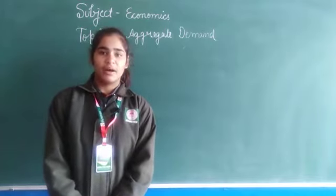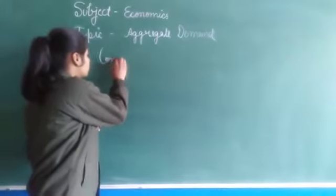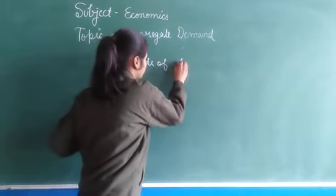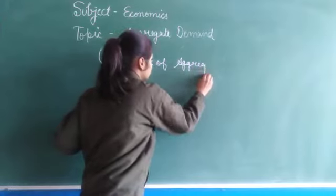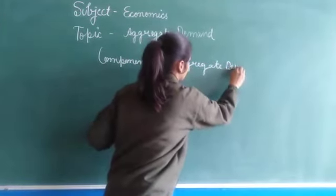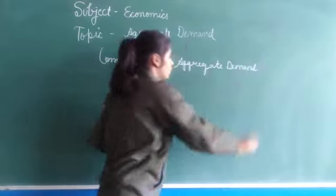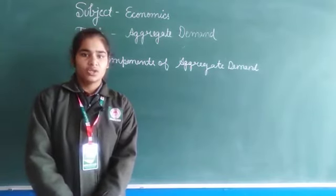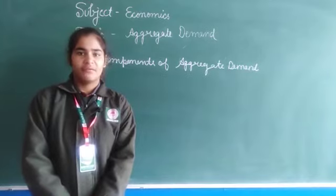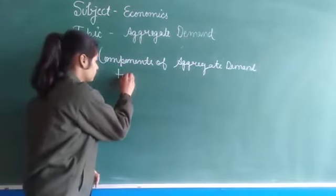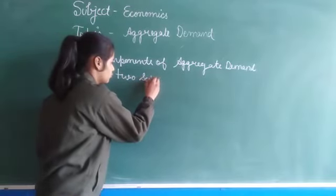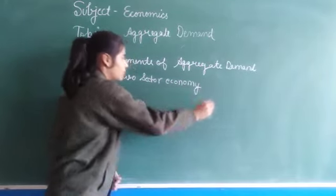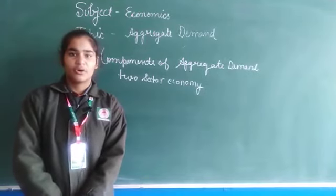Now, we will learn about the components of aggregate demand. Aggregate demand can be measured as open economy and closed economy. In the closed economy, there are two-sector economy and three-sector economy. In two-sector economy, there are household consumption and production consumption.